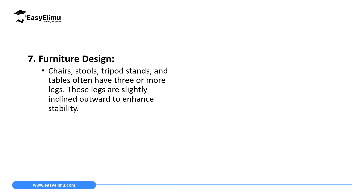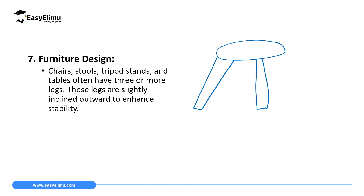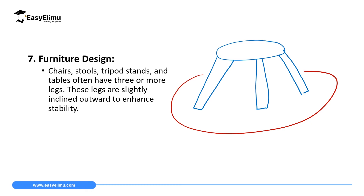Another application is in furniture design. Chairs, stools, tables, and even the tripod stands used in the laboratory have more than three legs that are spread out over a wide area. For example, a stool with four legs spread wide means that if it is displaced slightly, the weight of the stool still falls within the base area, maintaining stability.